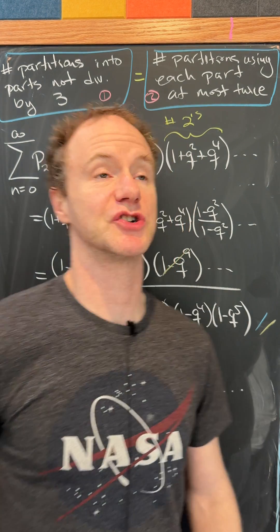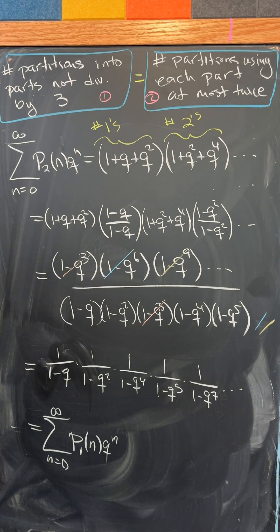Let's look at a quick problem about integer partitions. We'll prove that the number of partitions into parts that are not divisible by 3 is equal to the number of partitions using each part at most twice. And we'll do this with generating functions.